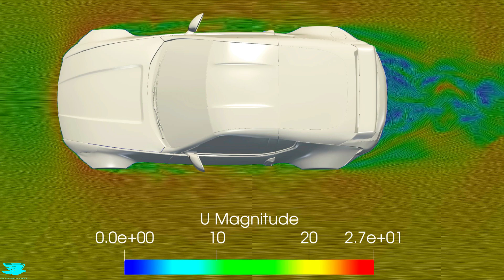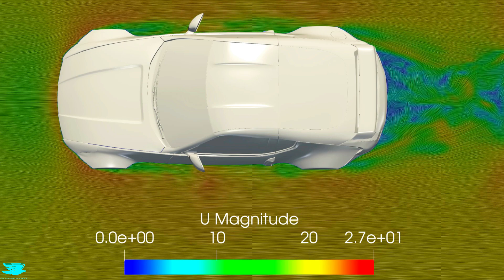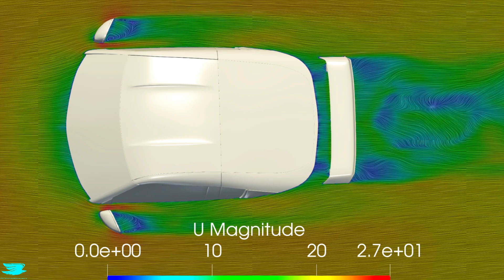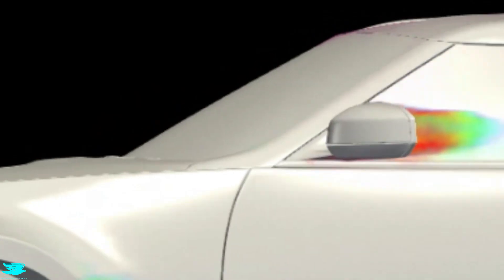In this plane which is about one meter off the ground, we can see how large the wakes are from the side mirrors and that comes with a lot of drag too.